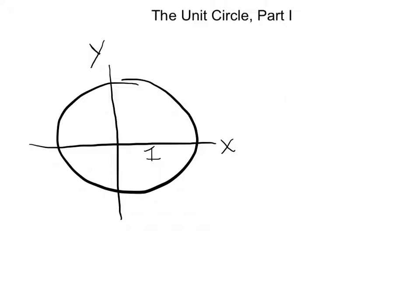We begin by considering a unit circle. As you see in front of you, a unit circle is simply a circle centered at the origin with radius one. This will be the heart of the development of sine and cosine.